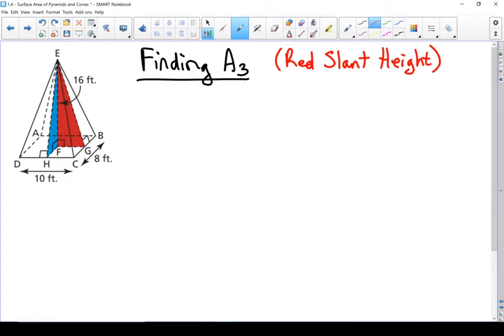There's the area of my first set of faces. Let's find area number three. That's this face right here. In order to find that area, we're going to need to find this red slant height right here. And to do that, we're going to use the red triangle that's inside our pyramid. Let's redraw that triangle.